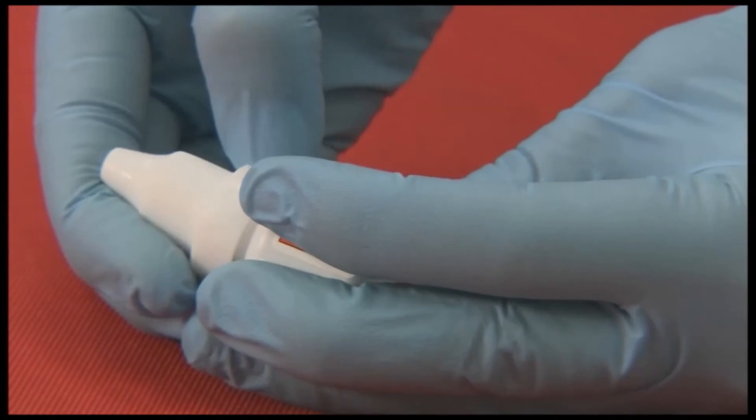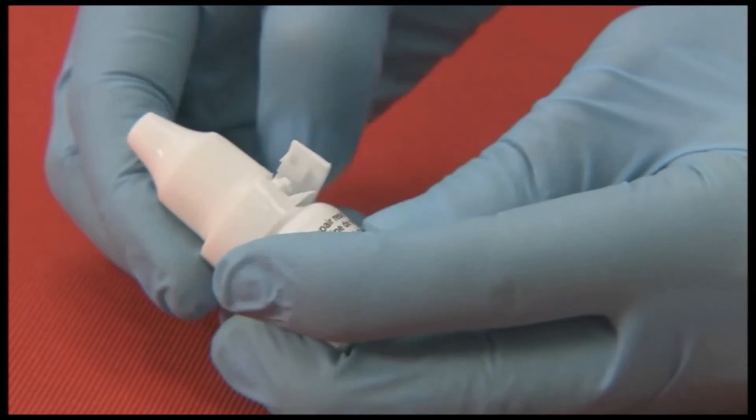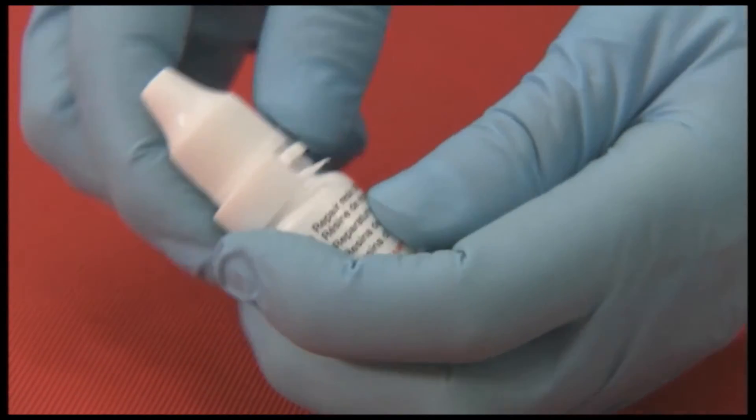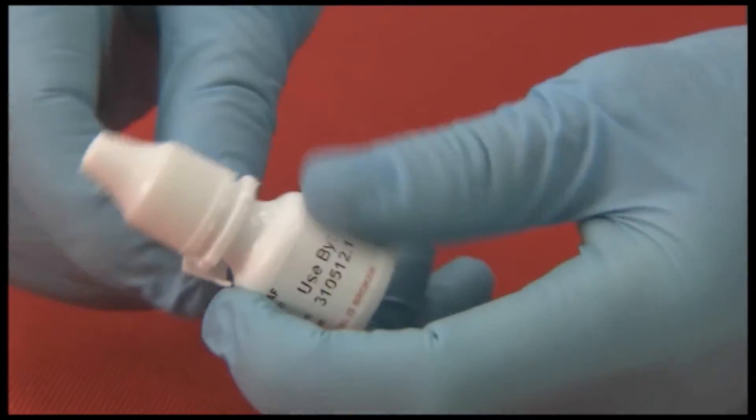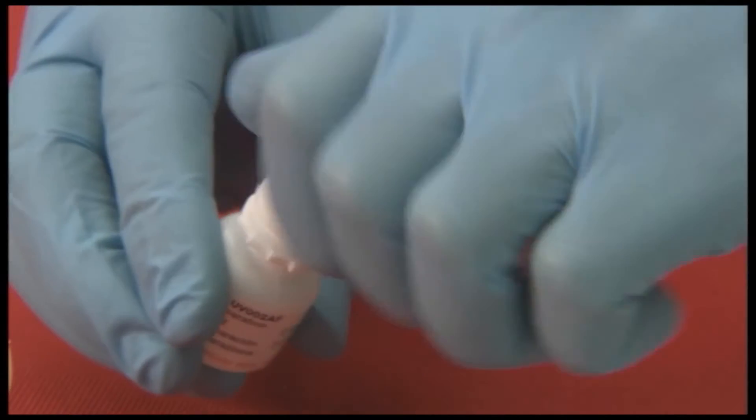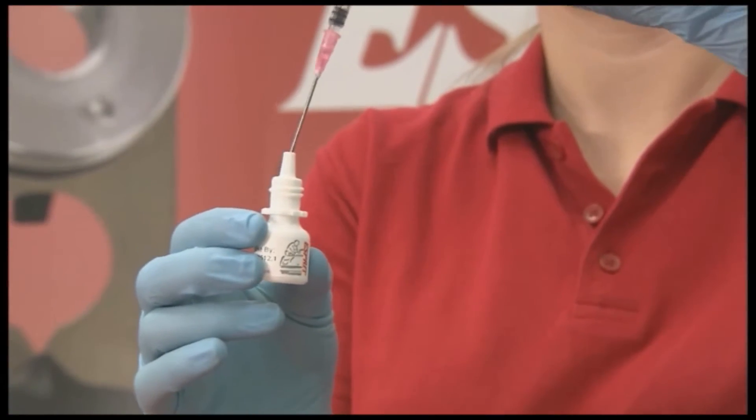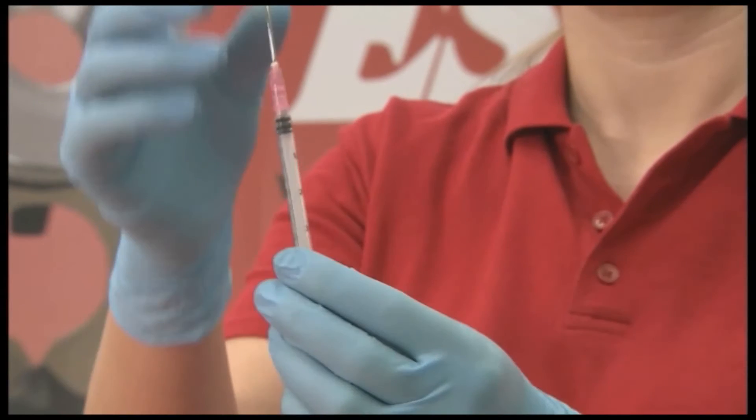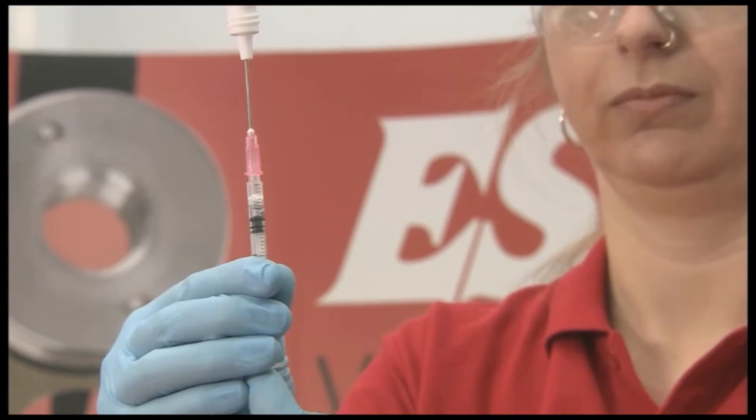Having fitted the needle to the syringe, the tamper proof seal is removed from the resin container. The needle is inserted into the tip of the nozzle, turned upside down, and 0.2 millimeters of resin is withdrawn.